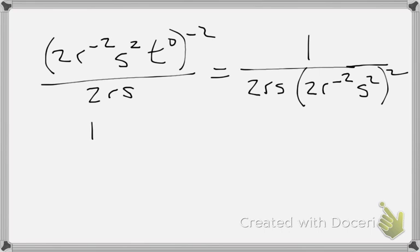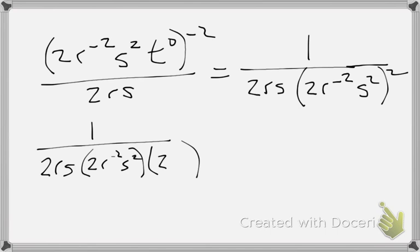Now, let's write all the parentheses the way we are. I am doing this in a very visual way because this is what I want you guys to pay attention to. 2r to the negative 2, s squared.